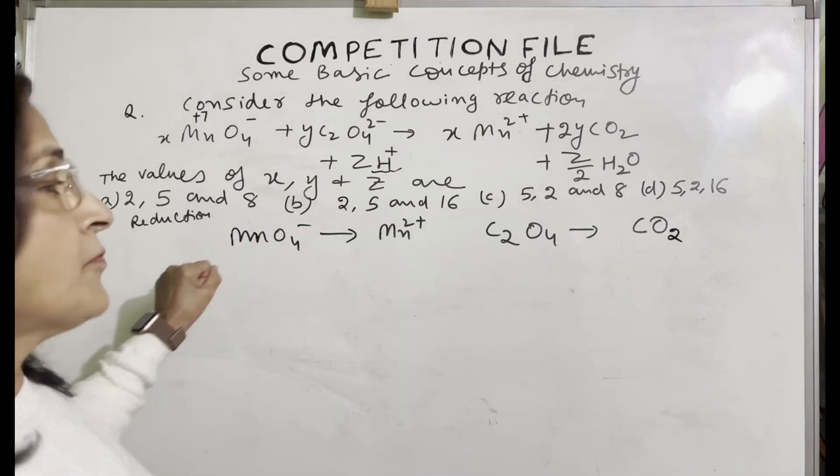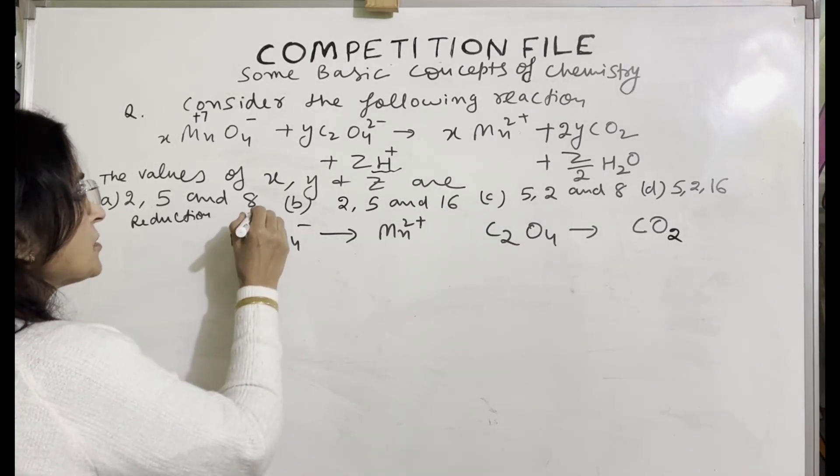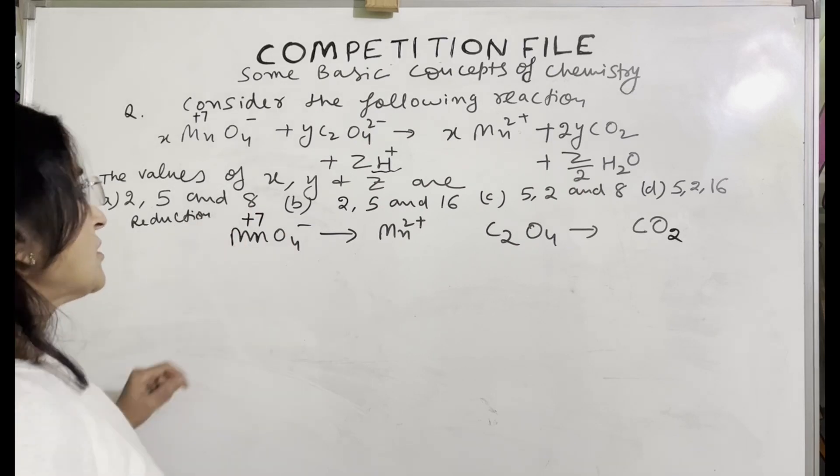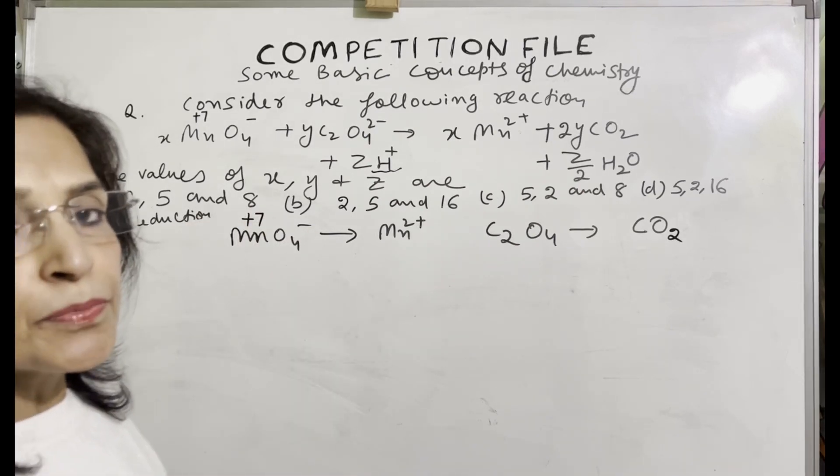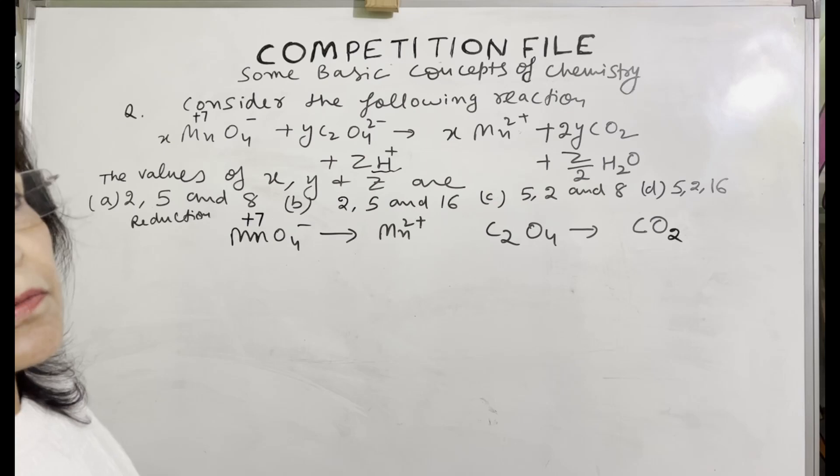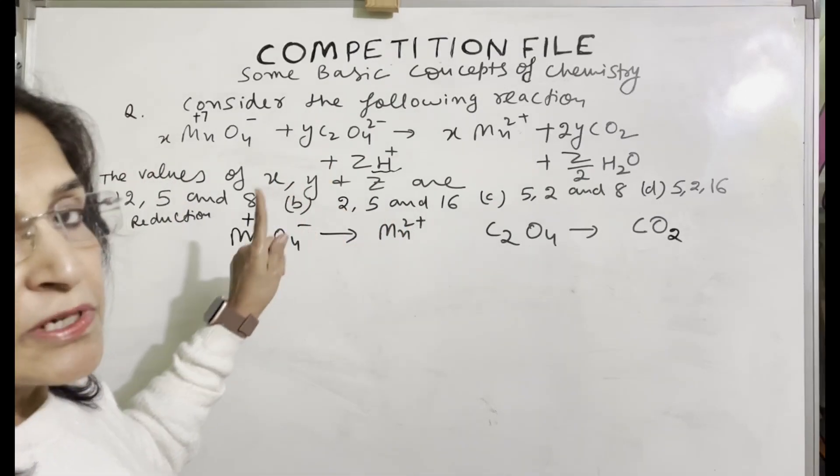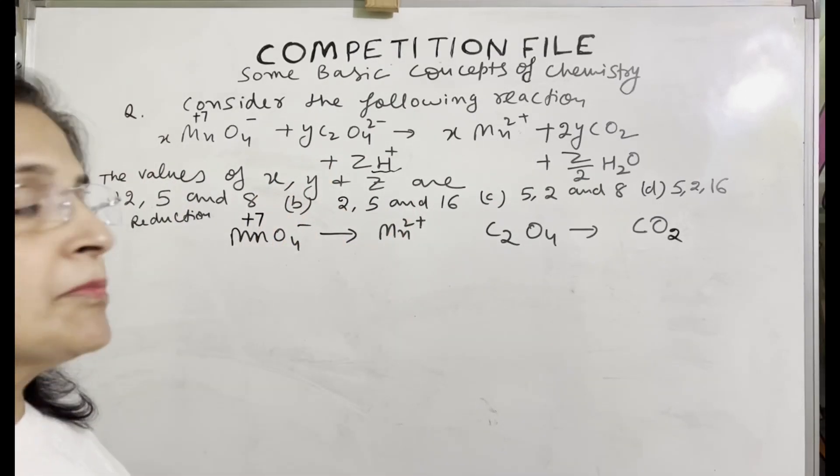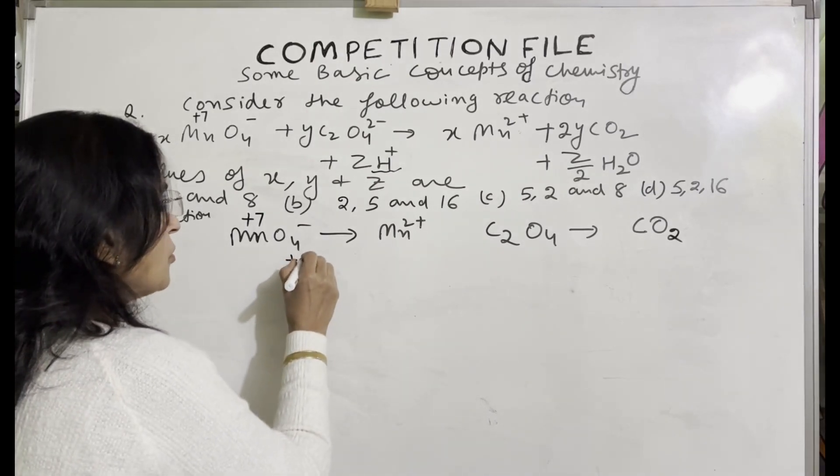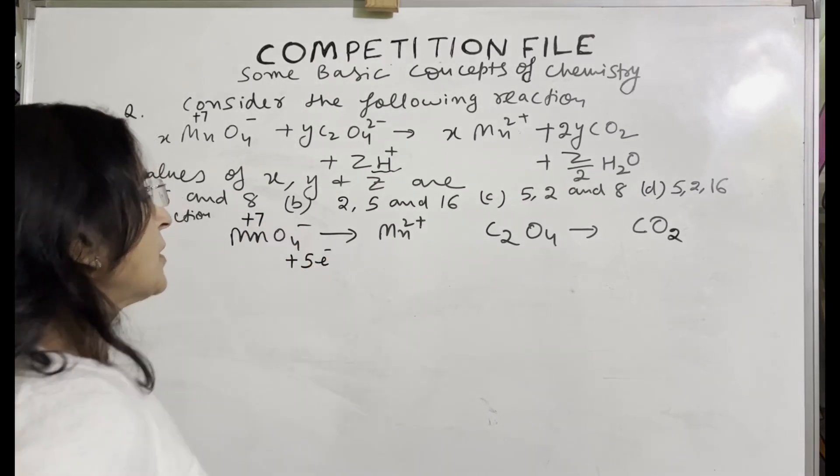In this half reaction, the oxidation state of manganese is plus 7. The oxidation state is changing from plus 7 to plus 2, which means reduction is taking place. So there is a difference of 5, meaning 5 electrons are being gained. So we'll add those gained electrons here.